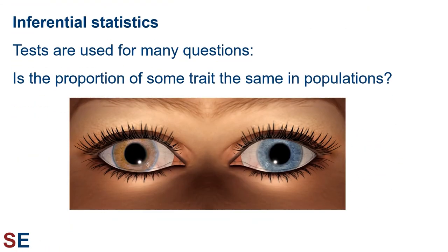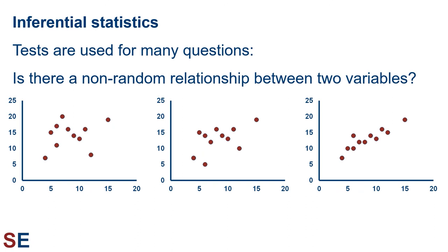Another question could be: do populations have the same variability? We usually care more about averages, but we might also care about if different populations are as varied as one another. For example, are the thicknesses of brake pads made in a factory more or less consistent when using different materials or procedures? Do men and women have the same range of blood pressures throughout the day? We could also think about a question like: is the proportion of some trait the same across different populations? For example, is the proportion of blue eyes the same in men and women? We can't assess every man and every woman, but we can get samples of men and women and then measure the proportion of blue eyes in each. We know the sample proportions won't be exactly the same as the population, but we can calculate the probability that our samples are as different as we see if the proportions of blue eyes are equal in the overall population of all men and all women. Or maybe we measure a pair of variables in the population and we want to know if they're related. Is the pattern between the variables random or non-random? It's hard to see a convincing pattern in the figure on the left, and the pattern on the right is clear, but what about the one in the middle? Is the pattern of data points random, or is there something real and non-random going on?